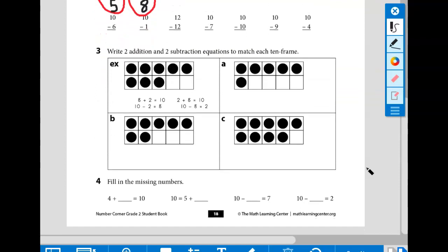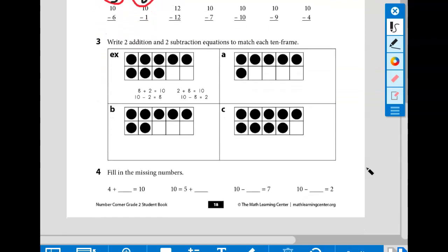Number three says write two addition and two subtraction equations to match each 10 frame. We can see in our example that we have 1, 2, 3, 4, 5, 6, 7, 8 dots and two empty squares. So our first equation is 8 plus 2. If we had two more dots right here, we would have 10.